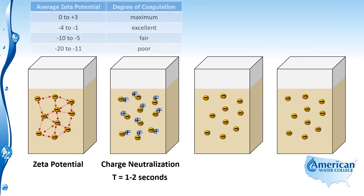Charge neutralization takes one to two seconds to occur, so once we rapidly mix the coagulant into the solution, within one to two seconds we've achieved charge neutralization. There are different degrees of coagulation, which is how we classify the extent of coagulation based on the zeta potential. You can see this chart in the upper left-hand corner showing the different degrees: maximum, excellent, fair, and poor. Starting at the bottom, poor coagulation would be a zeta potential in the range of minus 20 up to minus 11 millivolts.